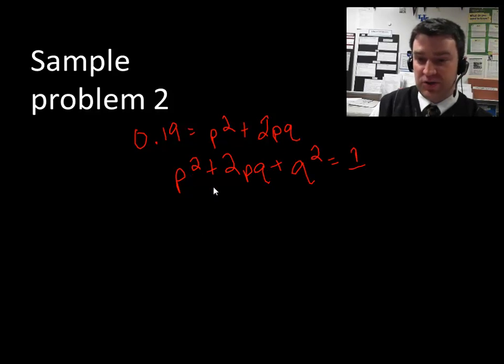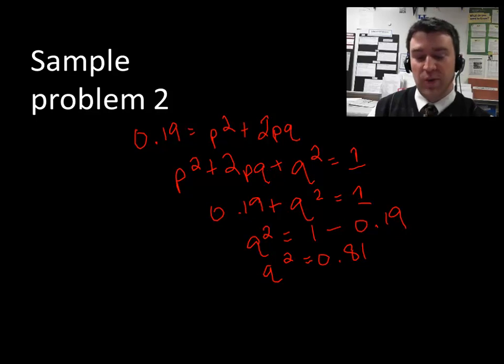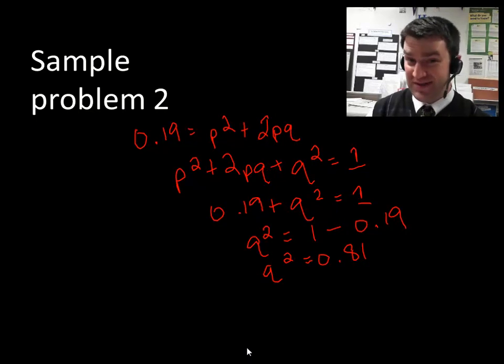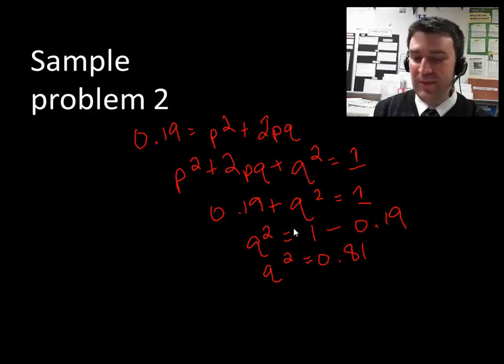In other words, I can just substitute 0.19 for this entire piece right here. 0.19 plus q squared equals 1. And I can figure out what q squared is. q squared is simply 1 minus 0.19. Use your calculator if need be. As it turns out, that is 0.81. So once I get q squared by itself, I can figure out what q is. Have you noticed that in these last two problems, we're able to solve things by getting to q squared? Then we can figure out q. Then we can figure out p. And we'll continue to work here. But you're going to find that oftentimes Hardy-Weinberg problems work that way.